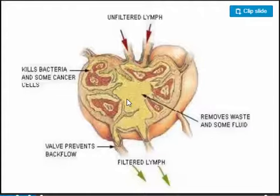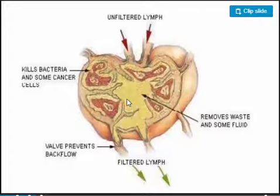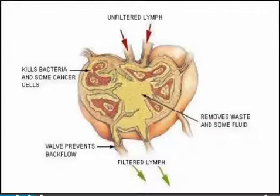The largest lymphatic organ is the spleen. Its main job is to filter and clean the lymph of cell fragments and abnormal tissue. It also contains many lymphocytes and other white blood cells that destroy harmful bacteria and foreign organisms. This concludes Chapter 30 — everything covered here is what you need to study for your exams.